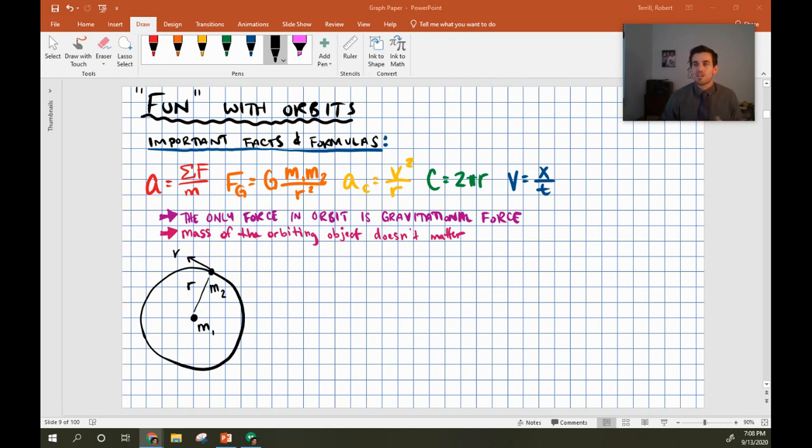If we're doing these kinds of things, there are some important facts and formulas you should be aware of. First is Newton's second law: acceleration equals the sum of the forces over the mass. Then we have the force of gravity, which is G times mass of the first object times mass of the second object over the distance between their centers of mass.